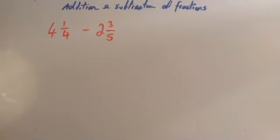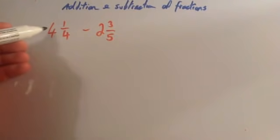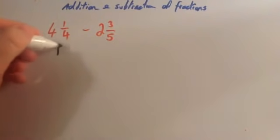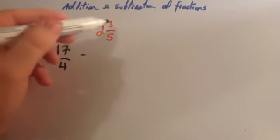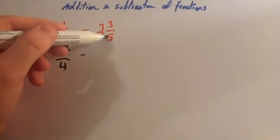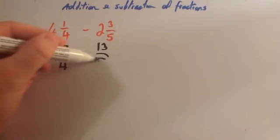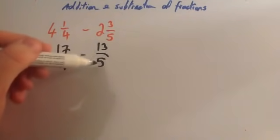Our last example: we're going to do four and a quarter subtract two and three-fifths. To do this, you need to make both of these top-heavy fractions to begin with. For four and a quarter: four times four is sixteen, plus one is seventeen, so that's seventeen over four. For two and three-fifths: two times five is ten, plus three is thirteen, so that's thirteen over five. So this is seventeen-quarters take away thirteen-fifths.